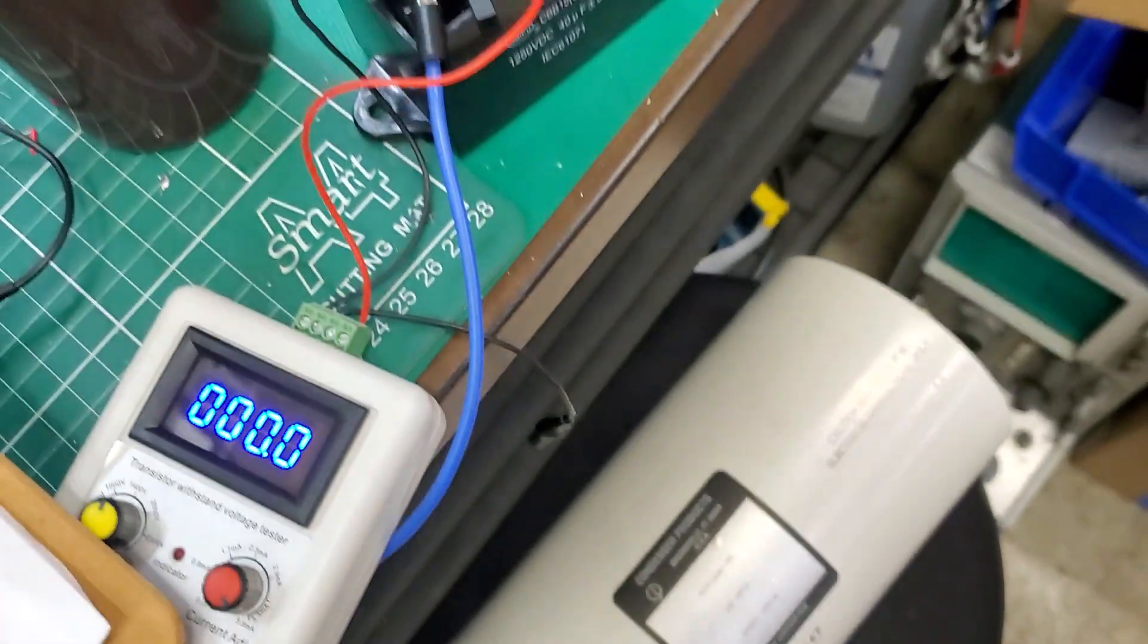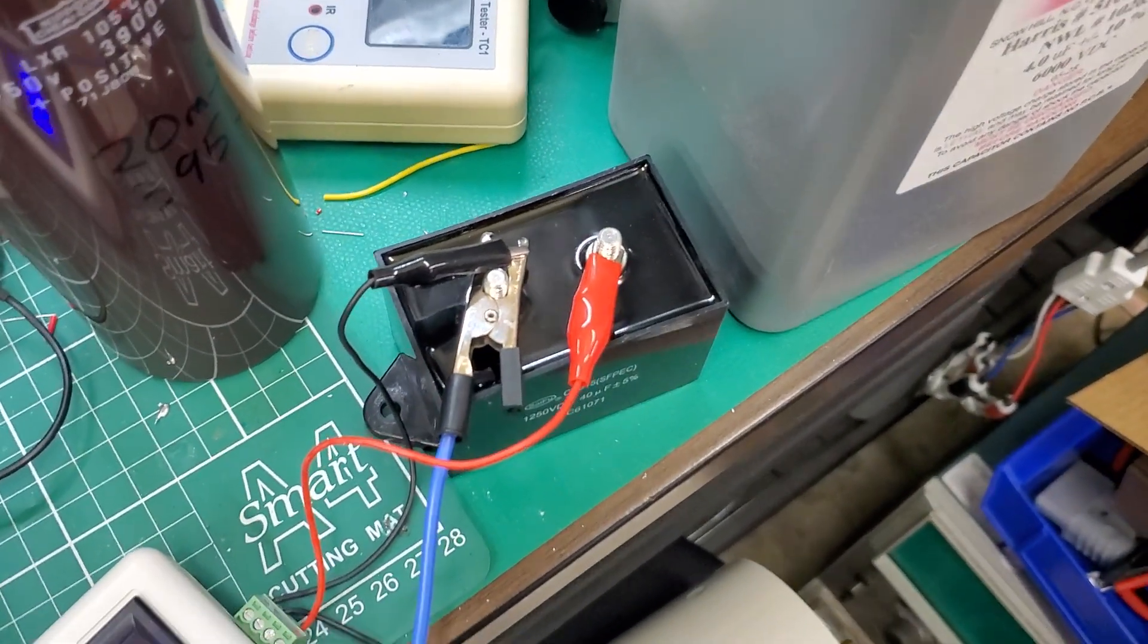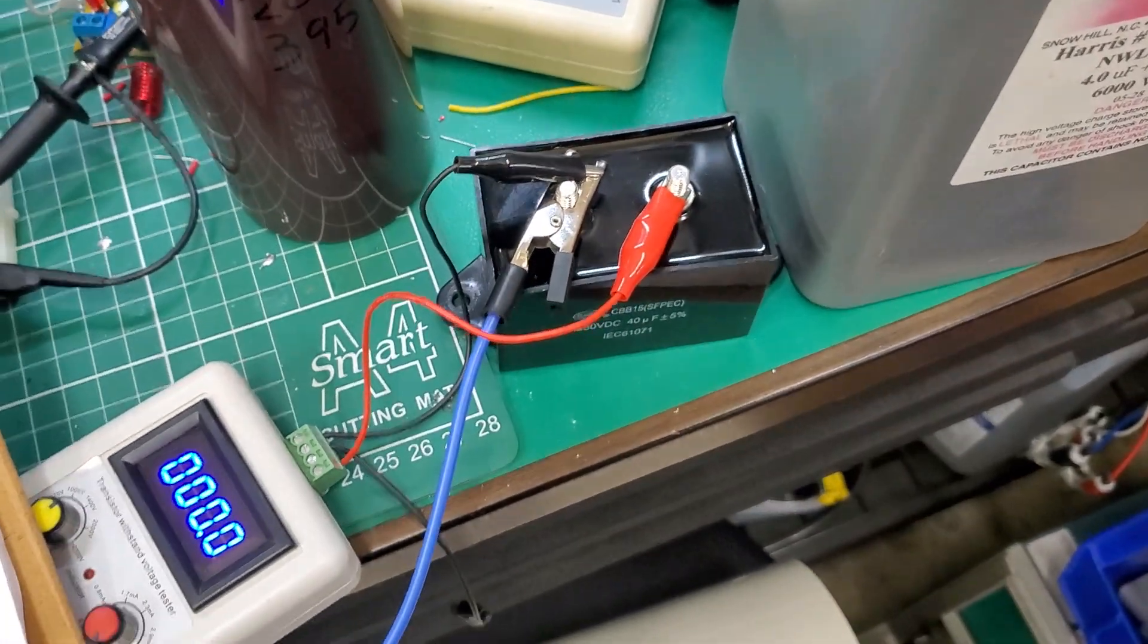Down here we have the LED and Zener and bridge resistor. And then on the other end we just have a cable going to a clamp that gets hooked on to whatever you're planning on discharging.